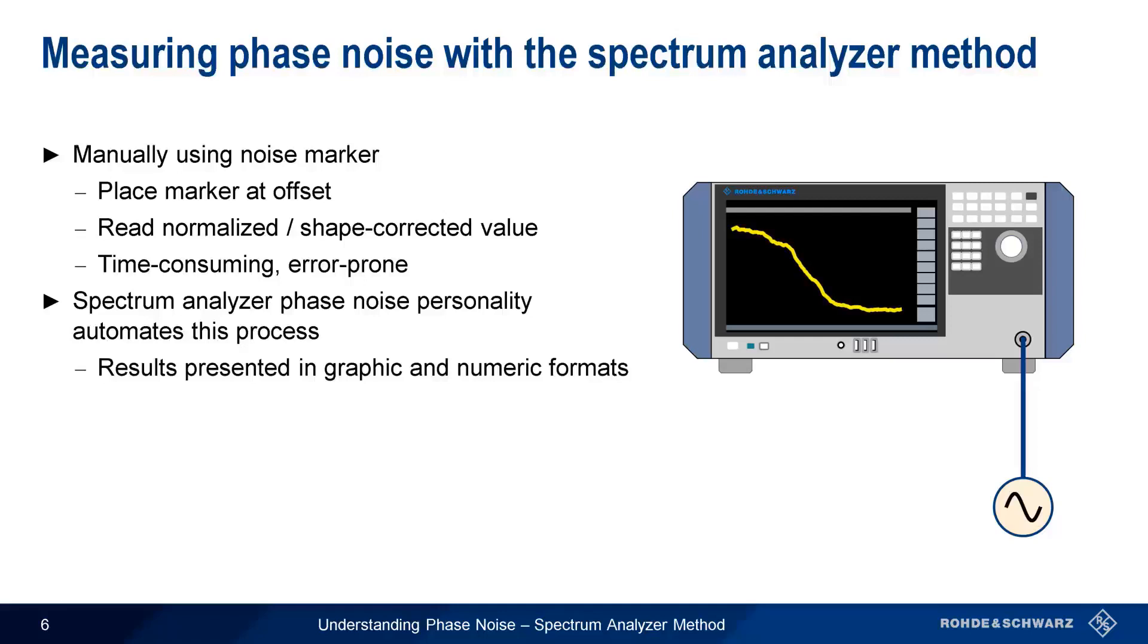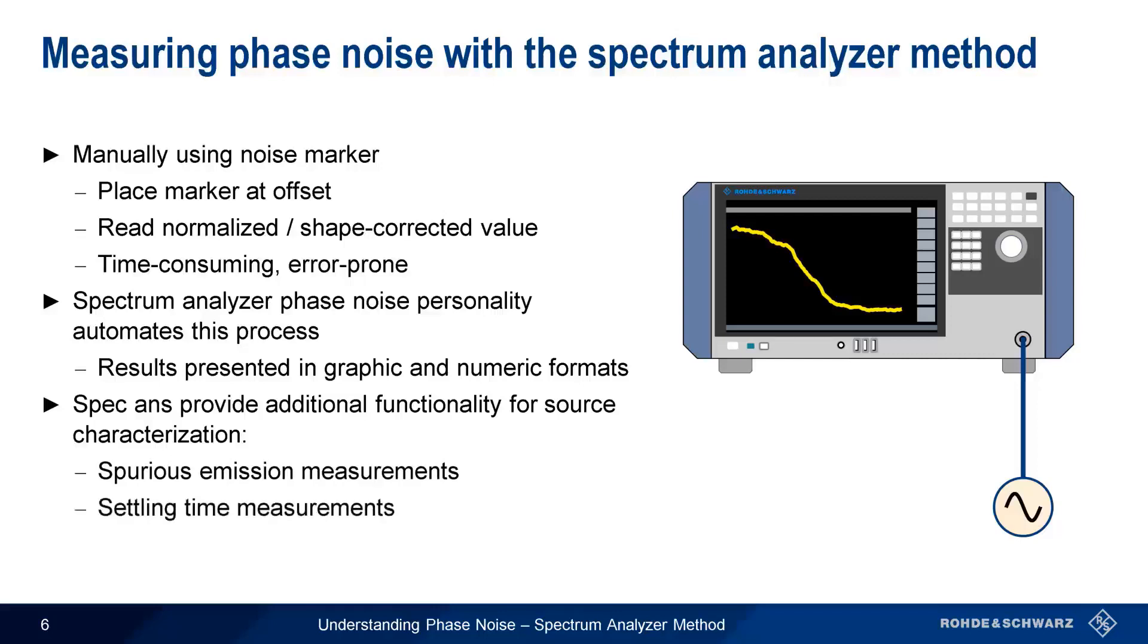Spectrum analyzers are general-purpose instruments. So the biggest advantage of using a spectrum analyzer for measuring phase noise is that it provides additional useful functions for characterizing sources, such as measurements of spurious emissions, settling time measurements, and many others.